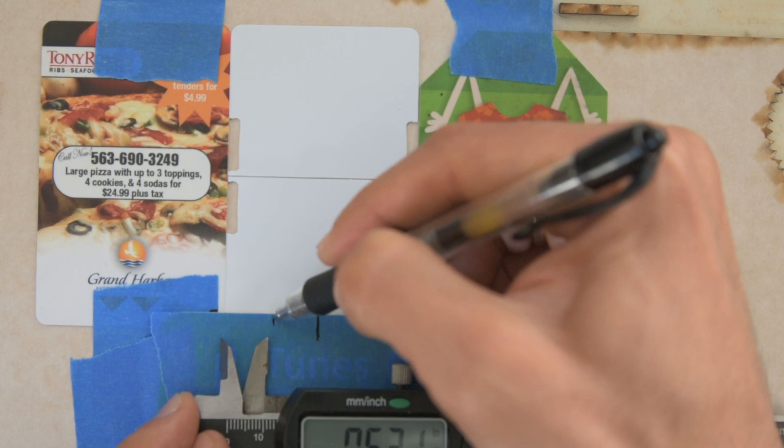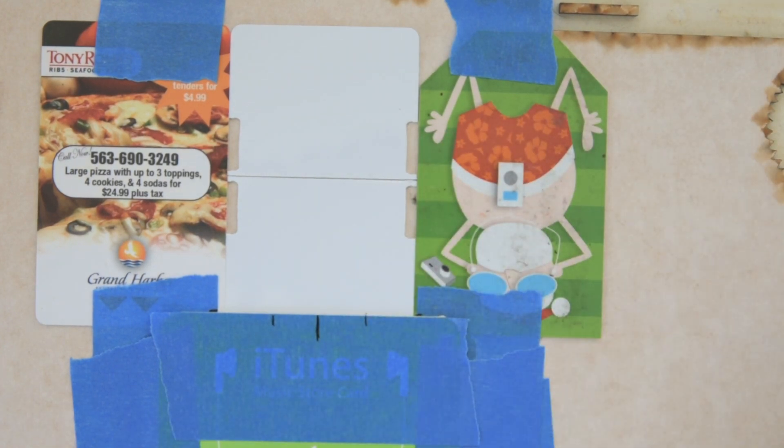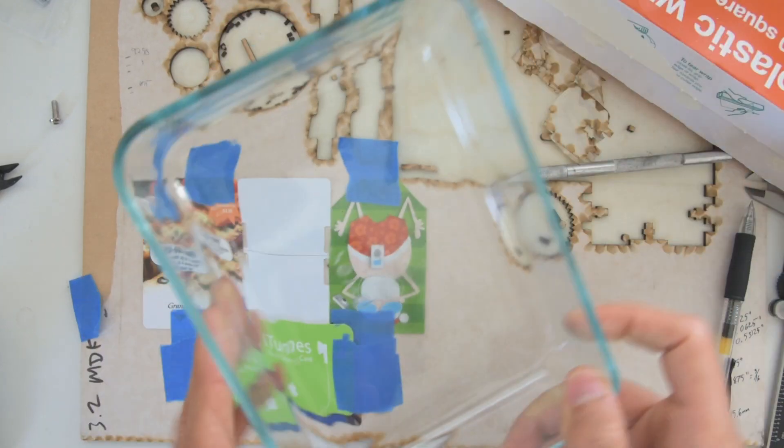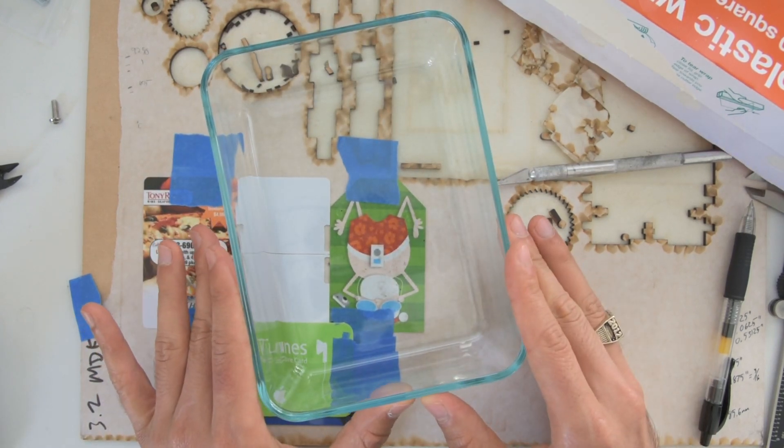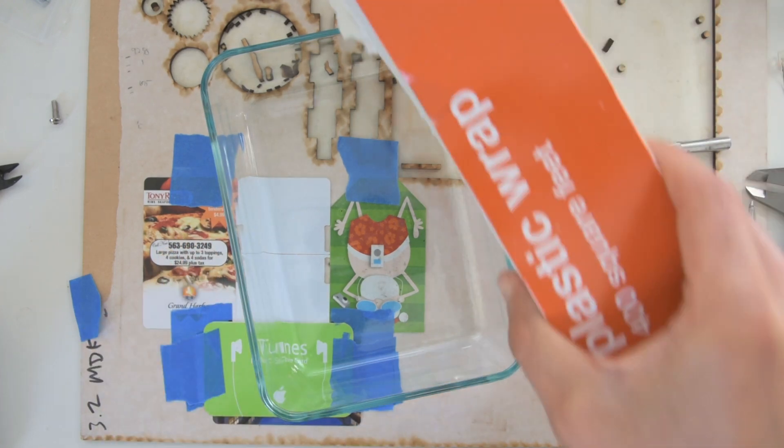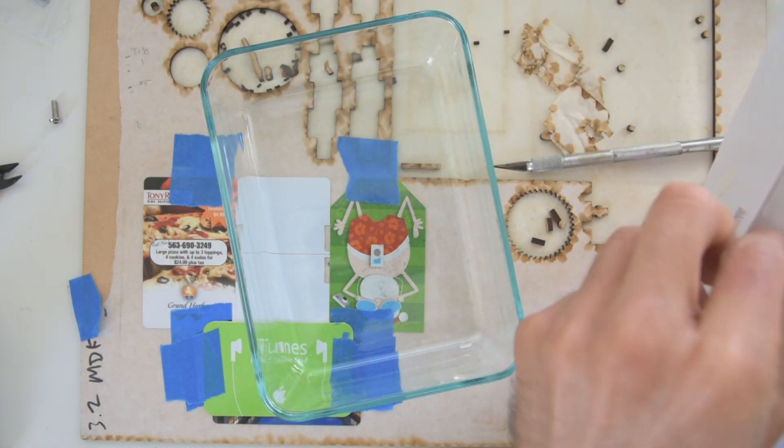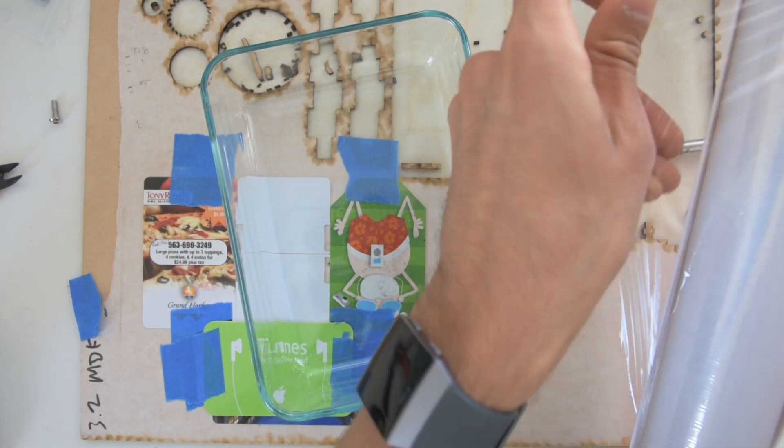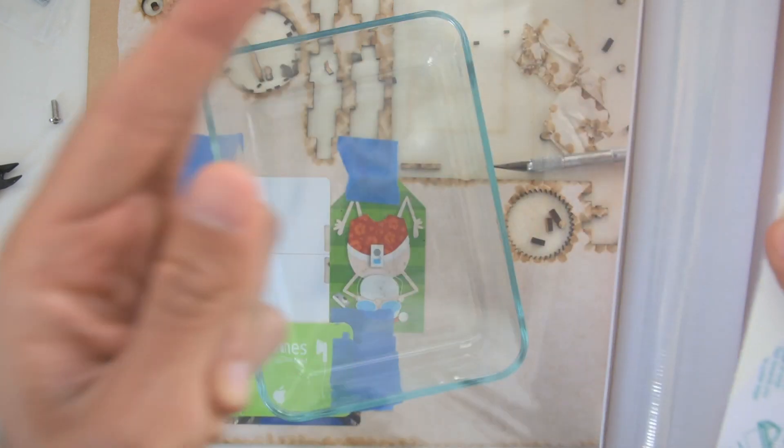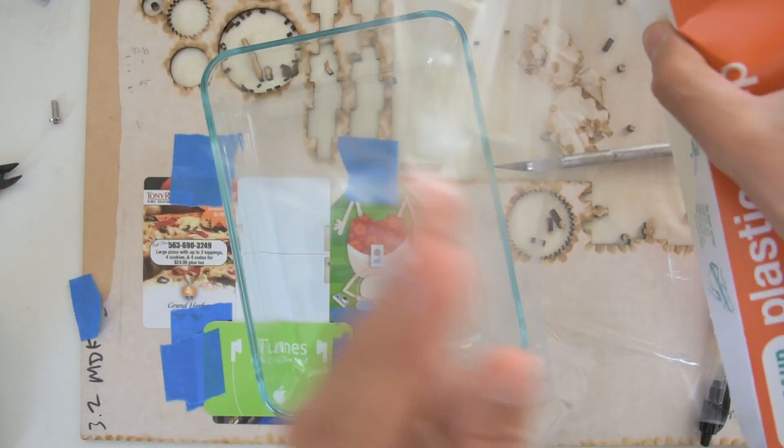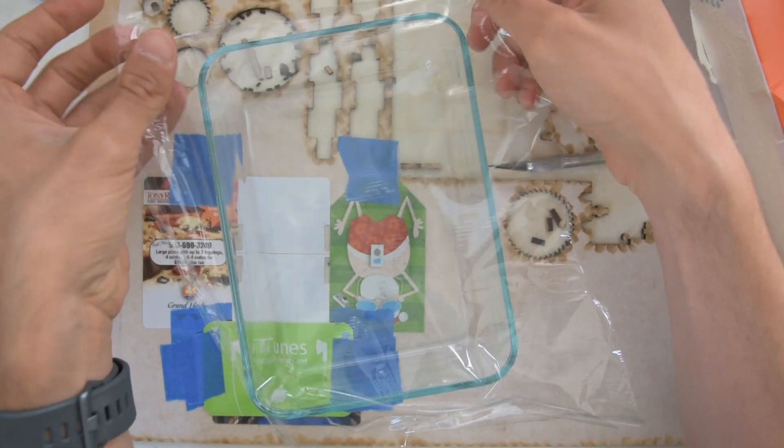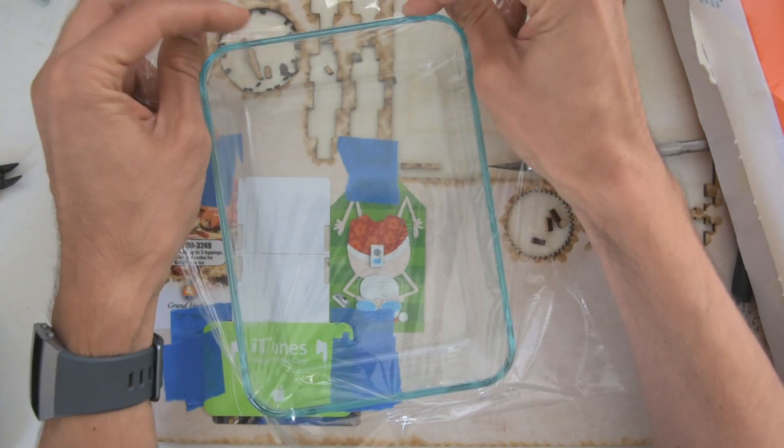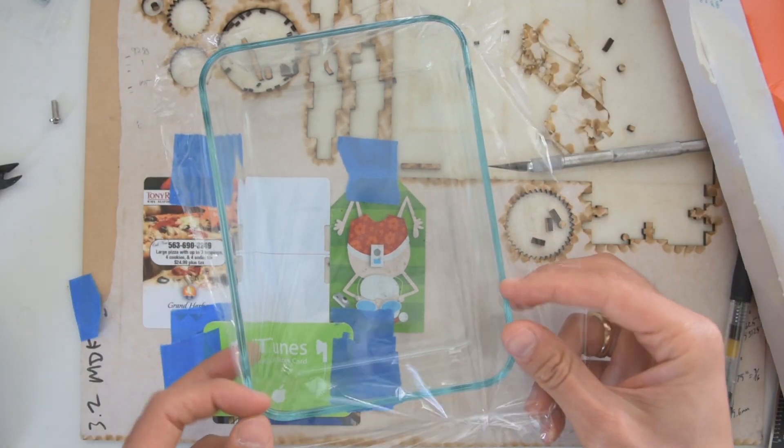So now that we've got our jig set up here to hold our flaps, we can work on the way that we're going to apply the stickers, which is with our storage container here. So we're going to take some of our plastic wrap, and we're going to get enough of this to cover the top of that container. And the reason we want to use a glass container is so that the plastic wrap sticks really well to it.